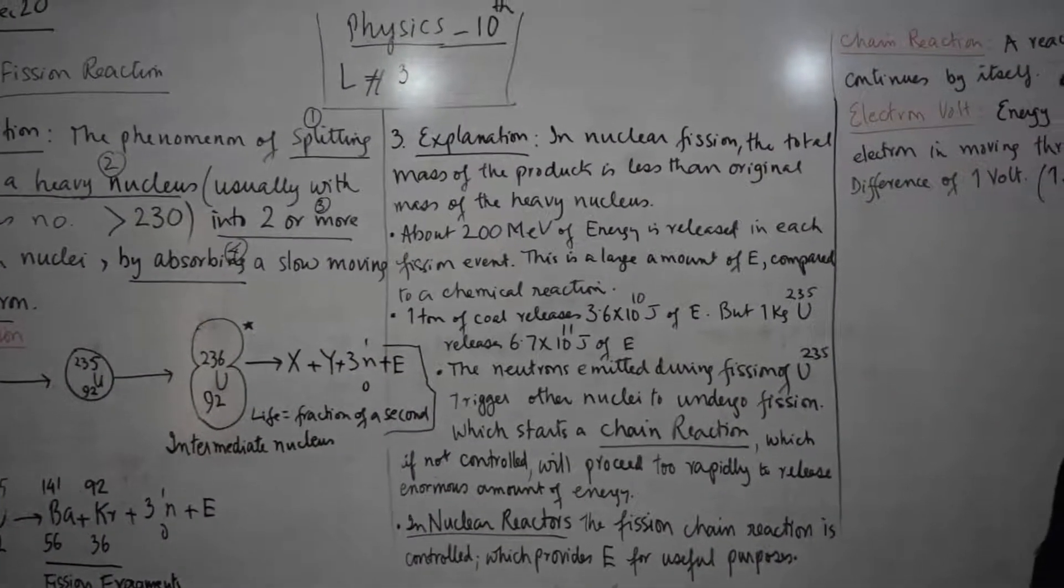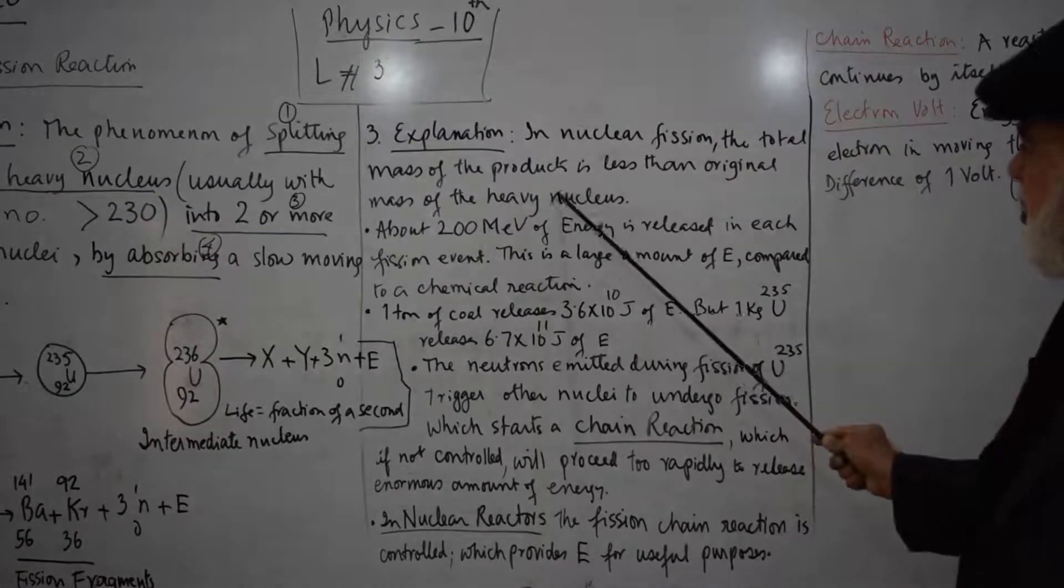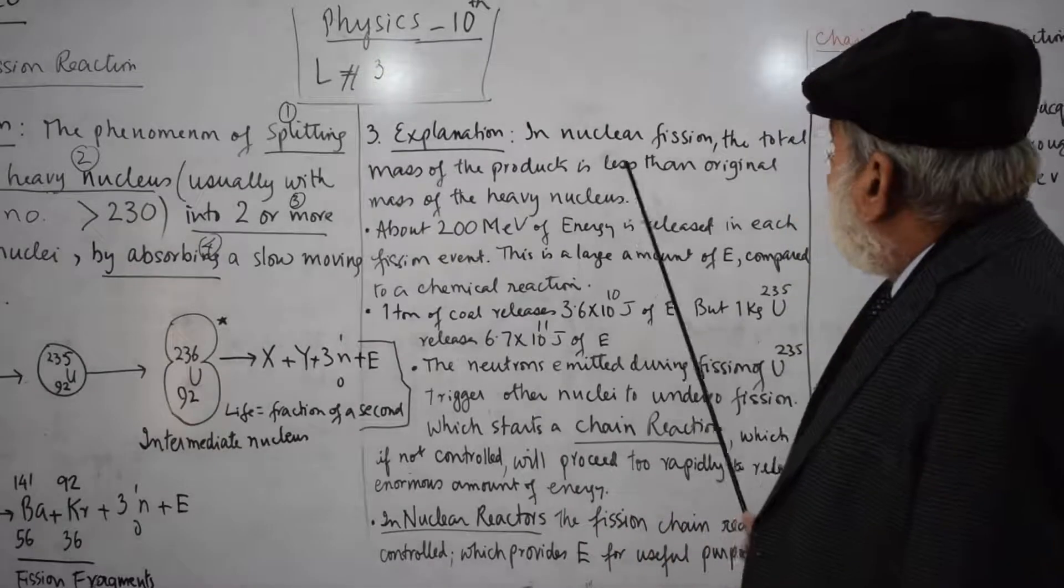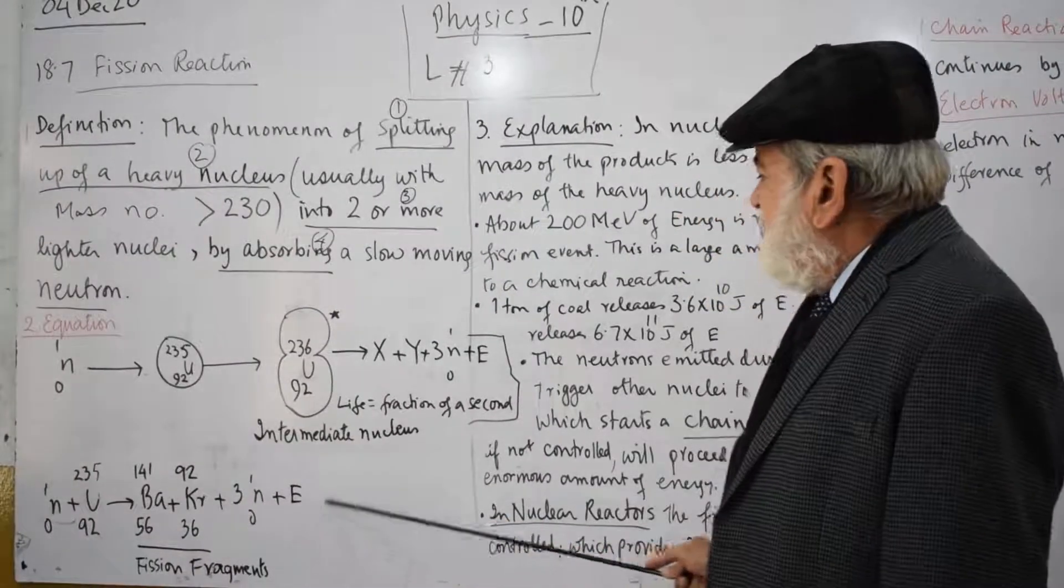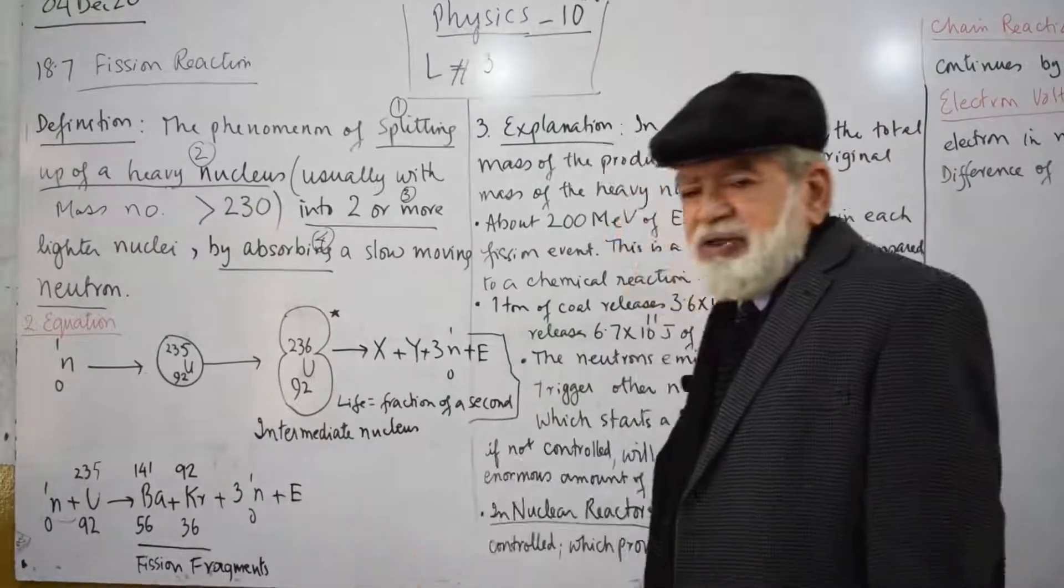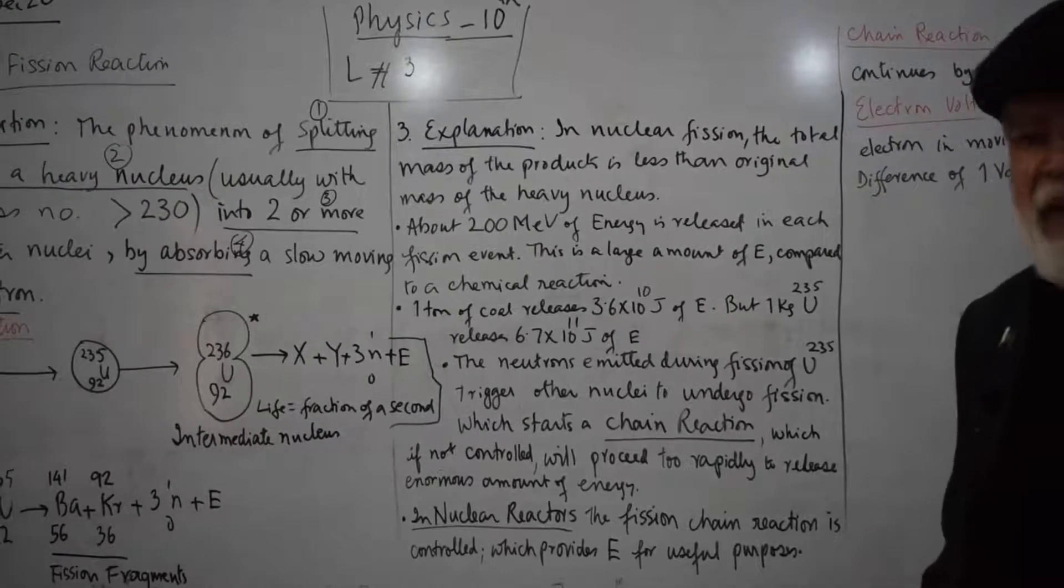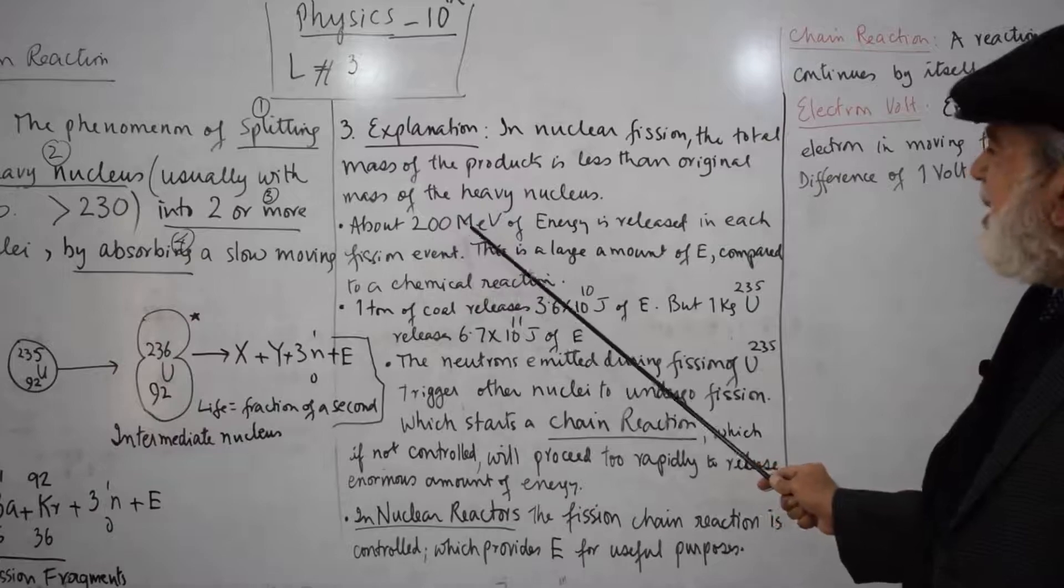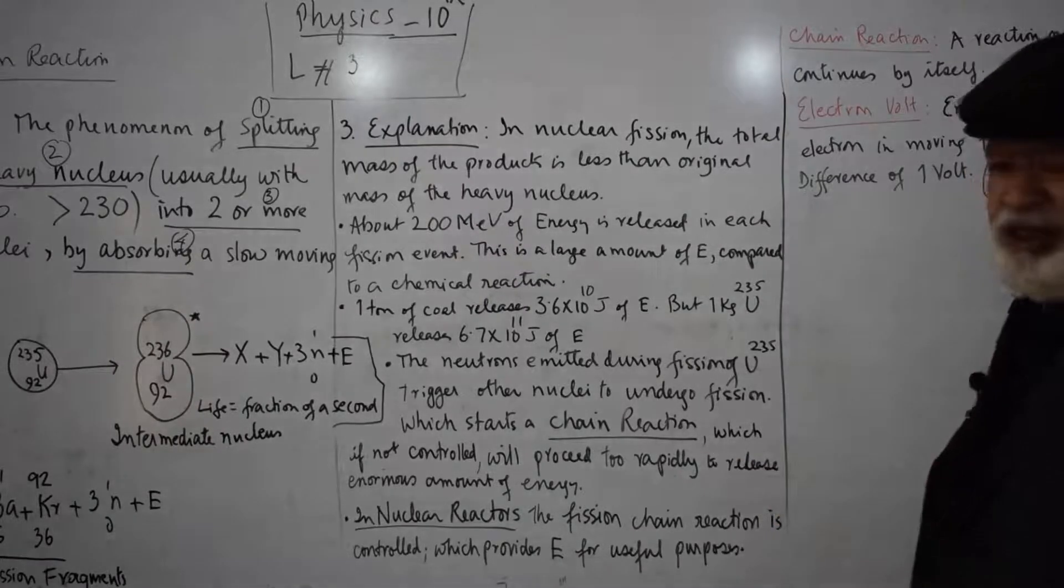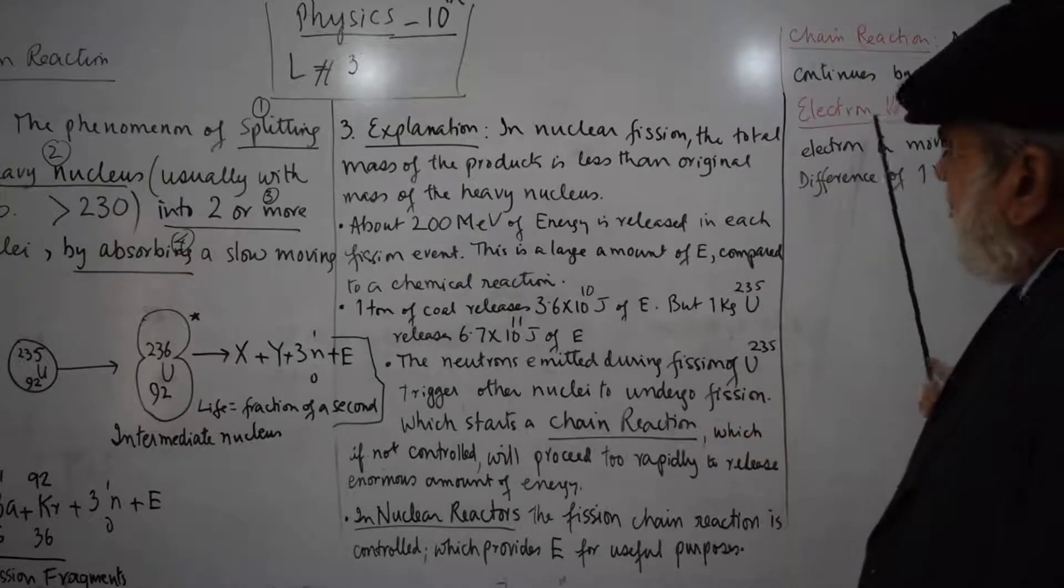Explanation: In nuclear fission, the total mass of the products is less than the original mass. That means its mass is slightly less than the original mass. For every atom that undergoes nuclear fission, about 200 million electron volts of energy is released.